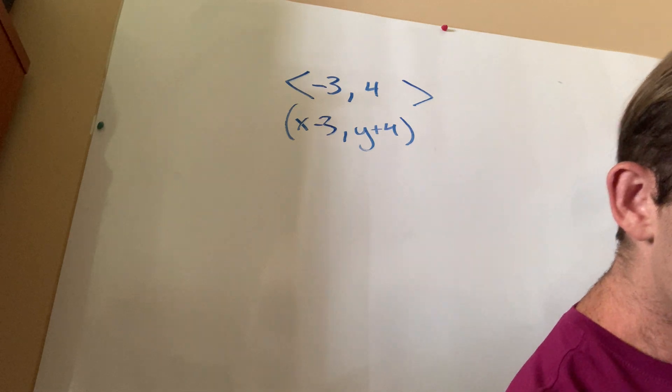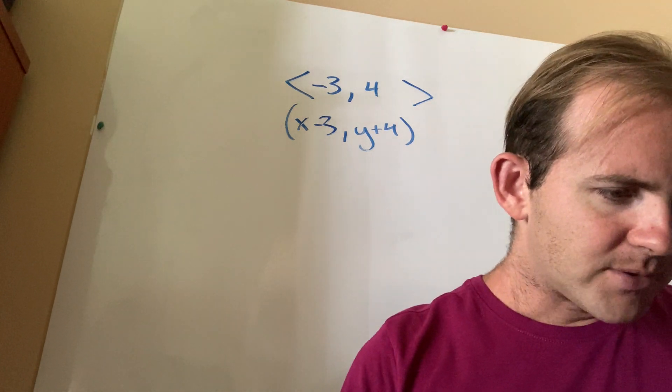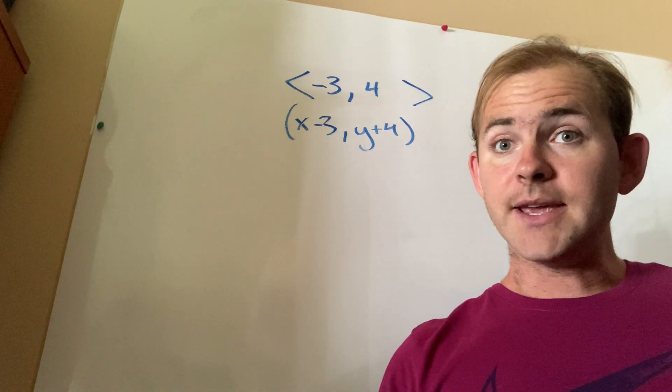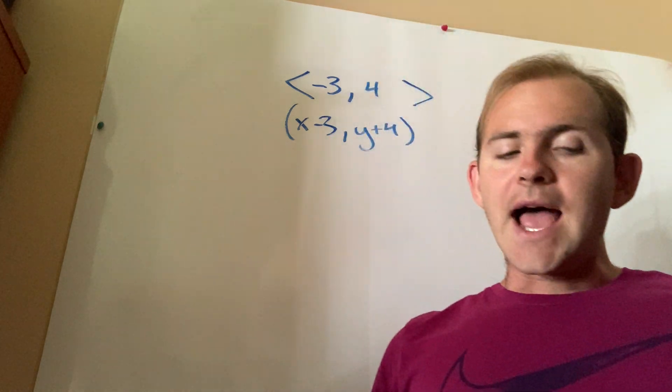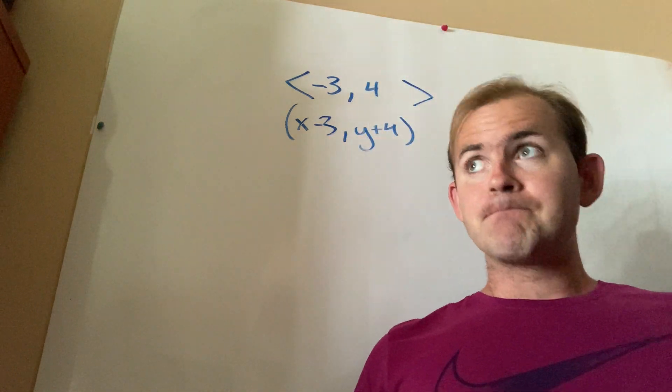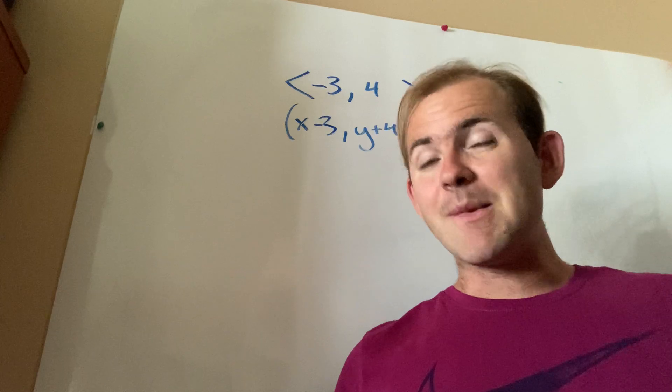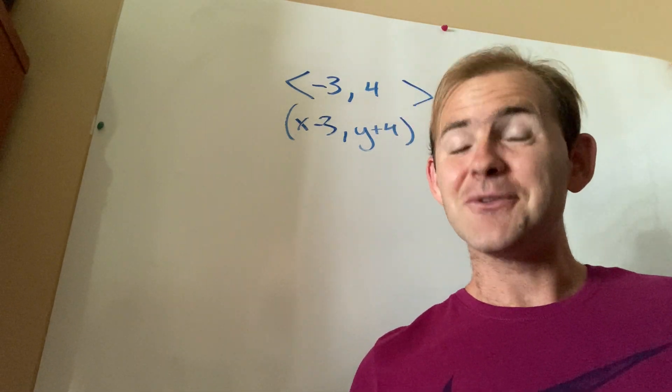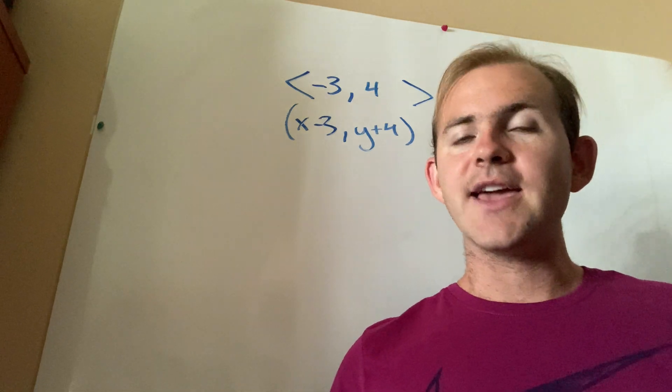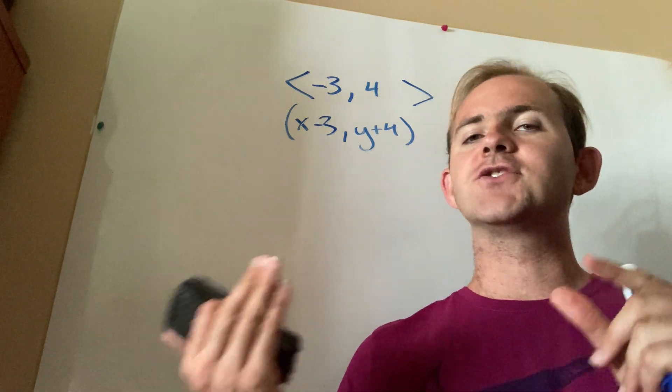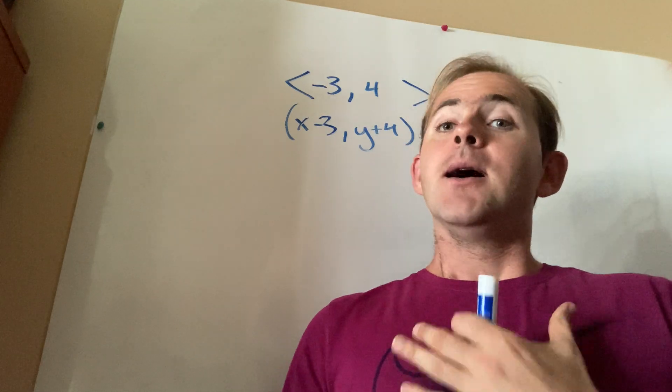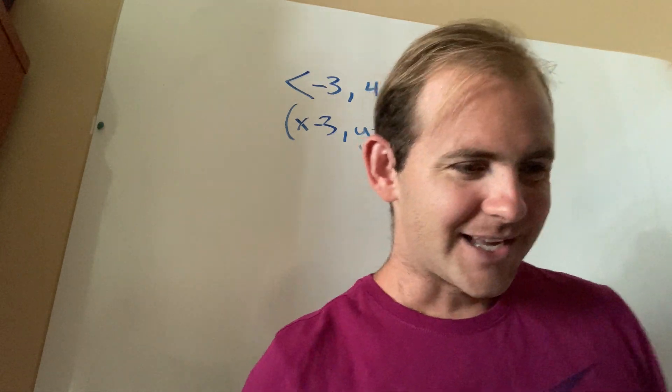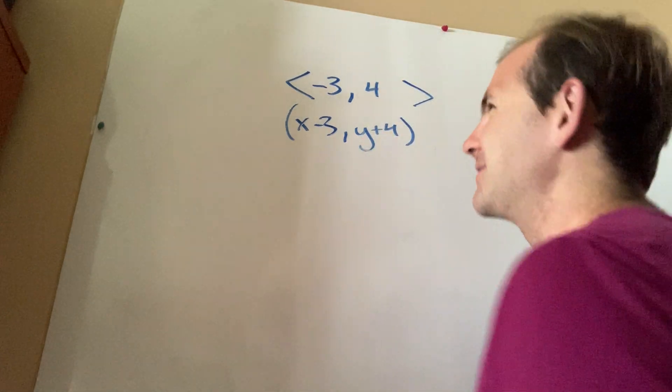So with that being said, let's take a look together at example number 11. Now again, I know that they give you a graph for this one. However, if you want to make it really efficient, you don't really have to use the graph. You can if you want to, but the more efficient way is to simply apply the coordinate rule directly to the coordinates.